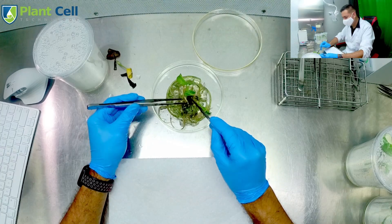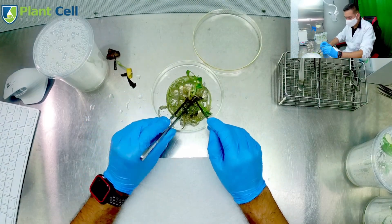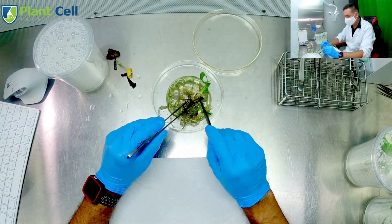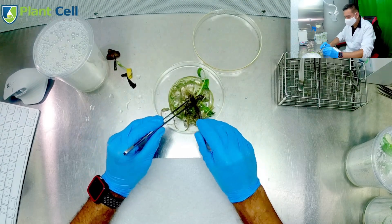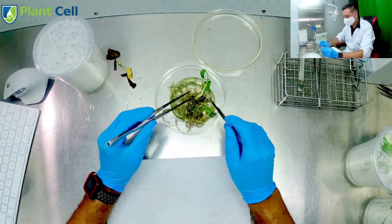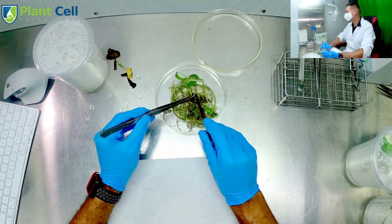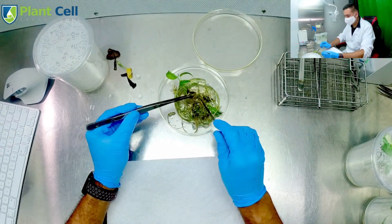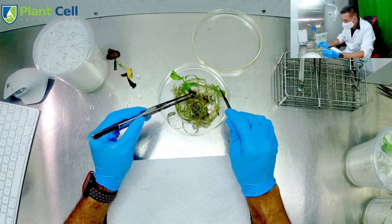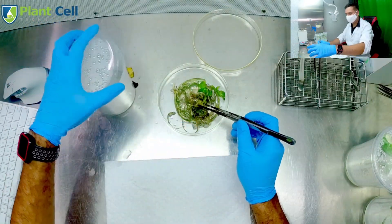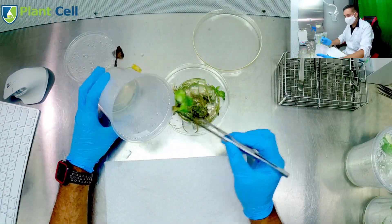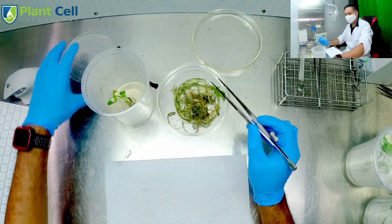However, if you want plants that look great - like big plants with a good amount of roots - then just stick to the same media: full MS, 30 grams of sugar, 1 milligram per liter of BA, 0.1 milligrams per liter of IBA, 1 milligram of PPM, and 8 grams of agar.